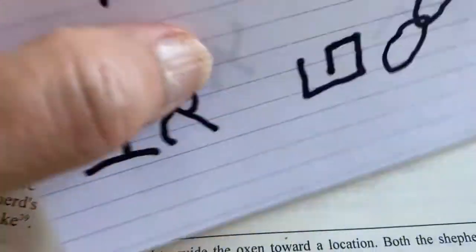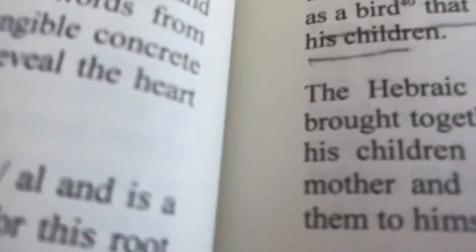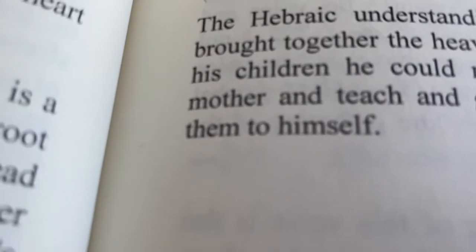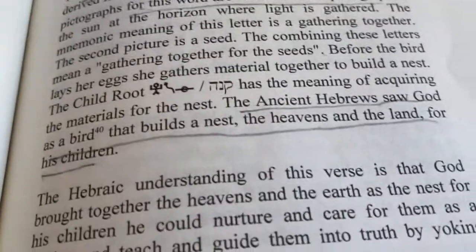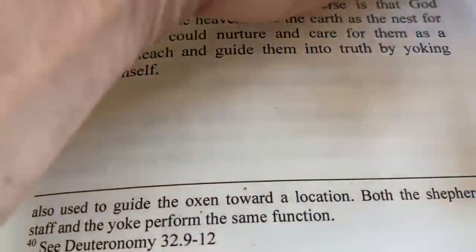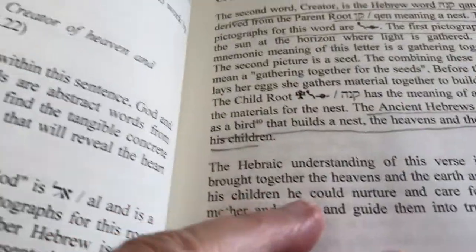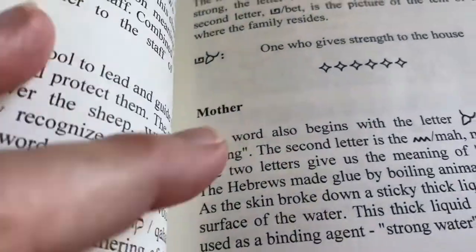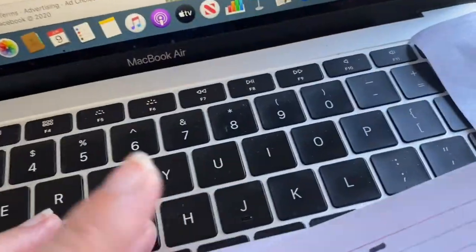Saying 'look' — so what does that mean? The ancient Hebrews see it as God as a bird that builds a nest — the heavens and the earth — for his children. God is laying the nest, the sun, and preparing for a sprouting seed and for the man. It's a picture of God preparing a world for his people.